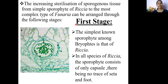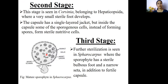The first stage is represented by the genus Riccia, which is the simplest known sporophytic structure among the various bryophytic plants. It is only having the fertile mass of tissues enclosed by the single-layered jacket, without any foot or seta-like sterile structures. So it represents the first stage in the process of progressive sterilization in bryophytic sporophyte evolution.